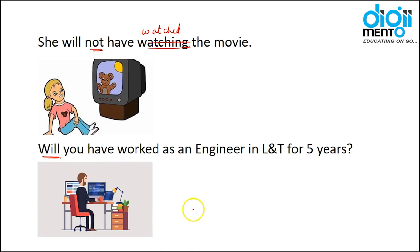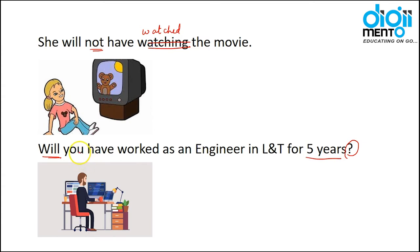'Will you have worked as an engineer in L&T for five years?' — this is a question asking whether you will have worked in L&T for five years. Positive: 'You will have worked as an engineer in L&T for five years.' Negative: 'You will not have worked as an engineer in L&T for five years.'